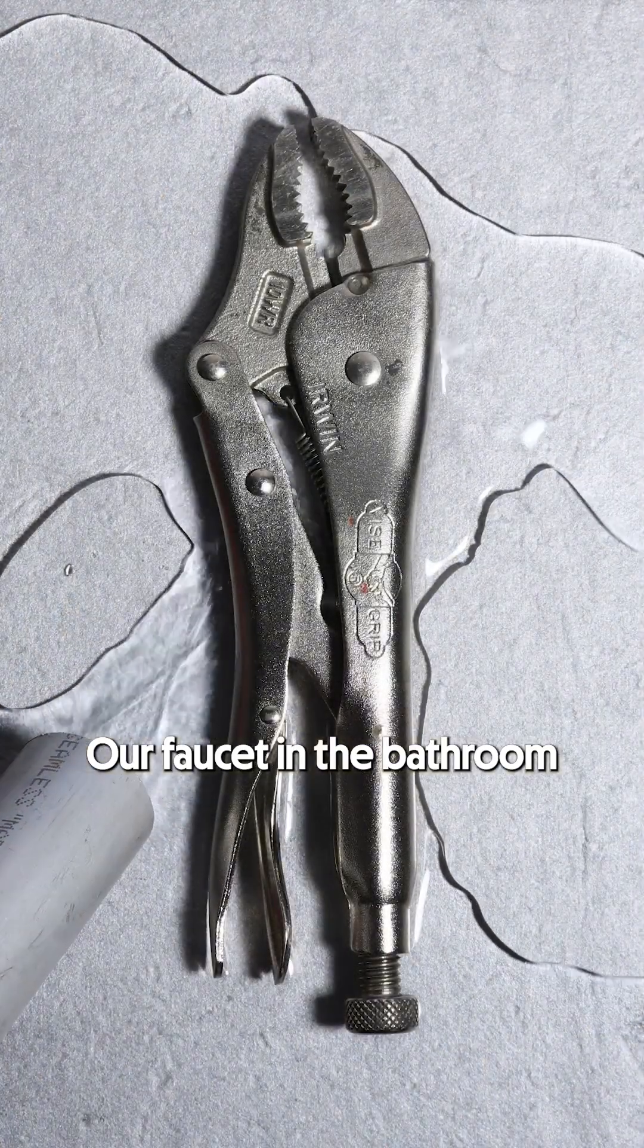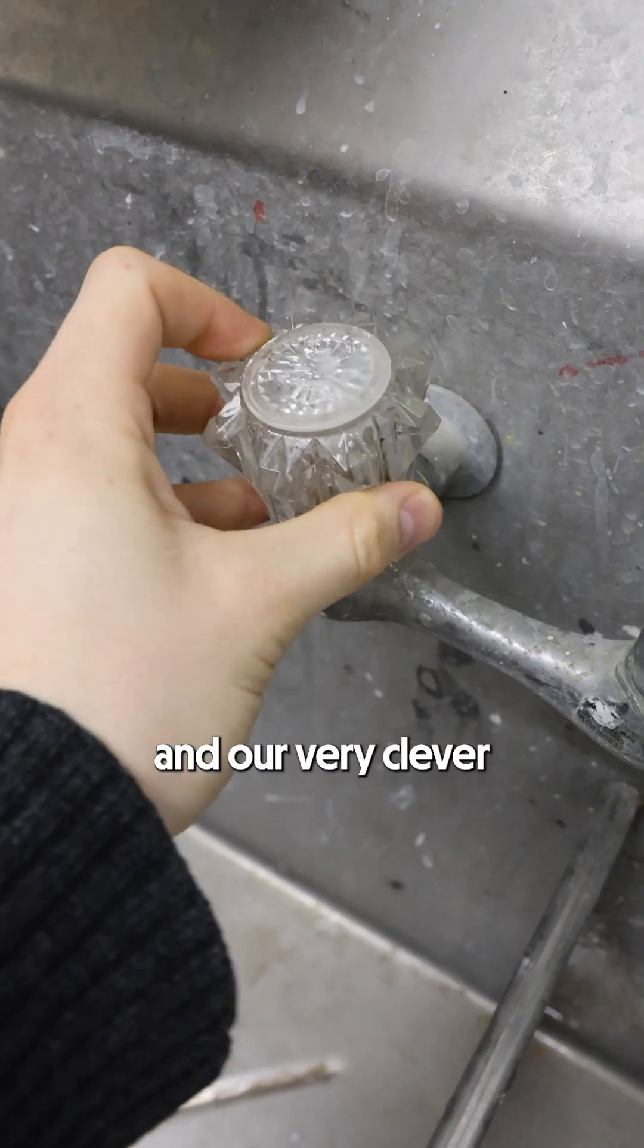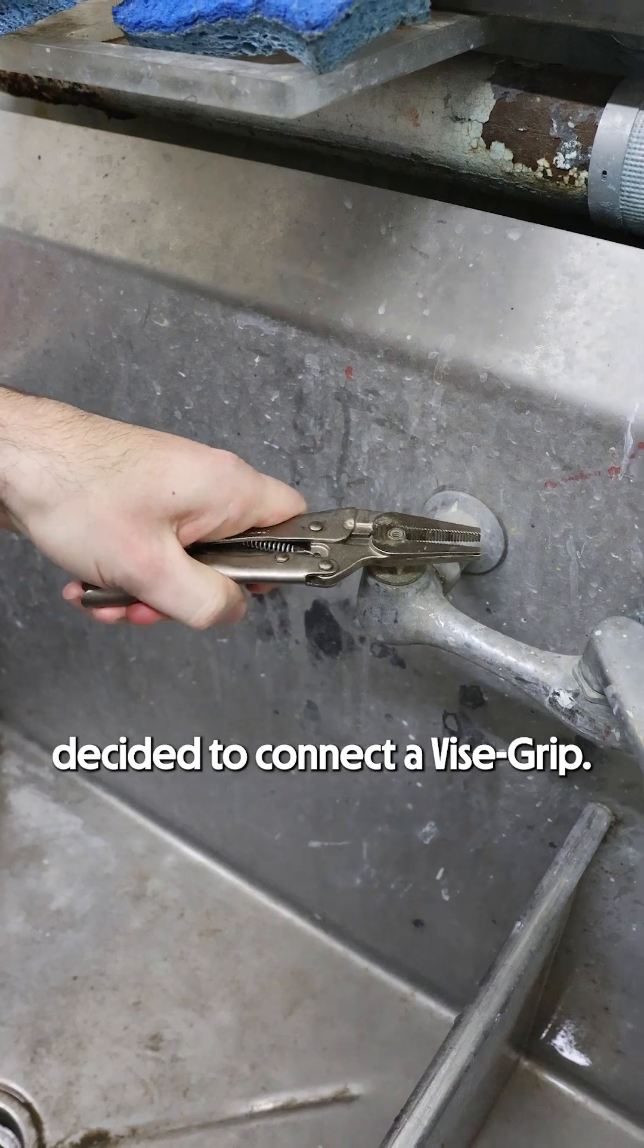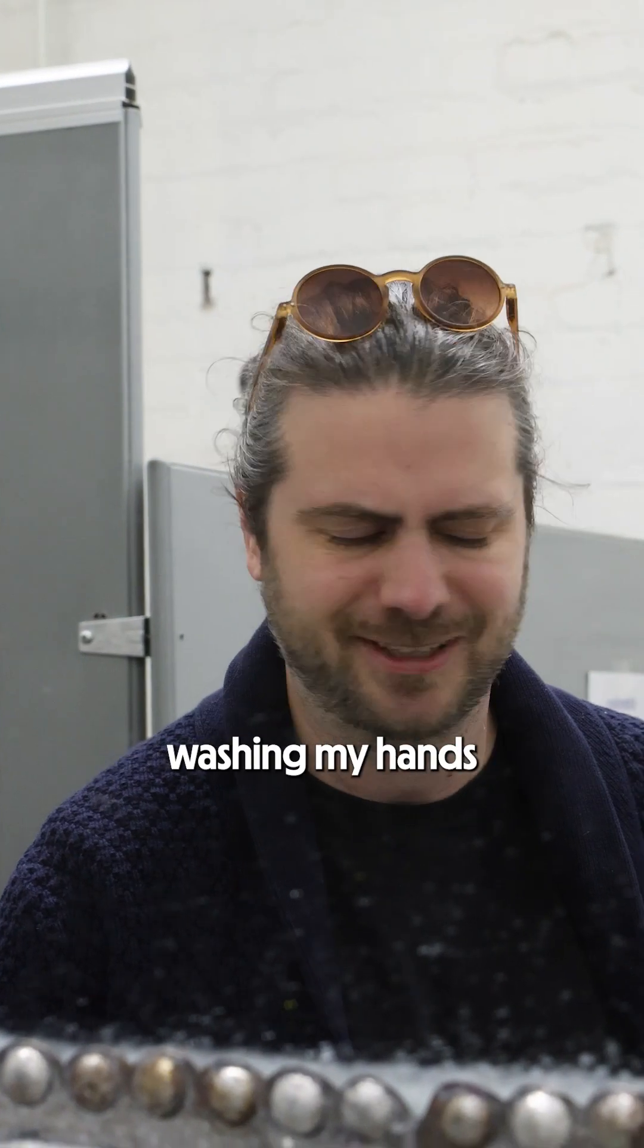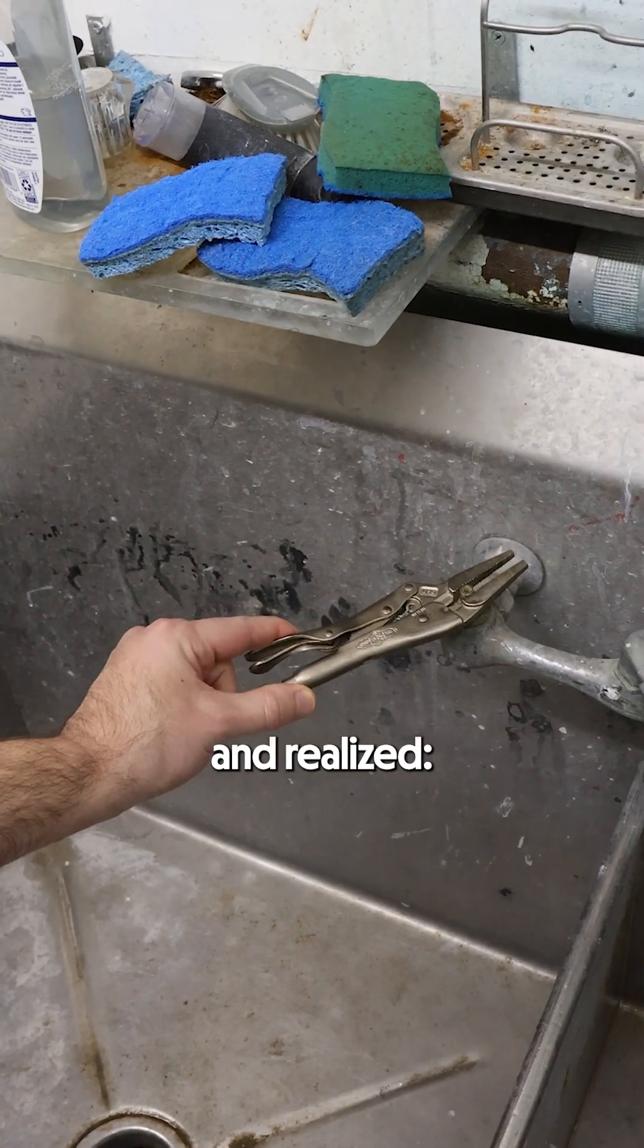Our faucet in the bathroom down the hall broke and our very clever woodworking neighbor decided to connect a vice grip. And I was in the bathroom washing my hands and looking at the vice grip and realized that's a four-bar linkage.